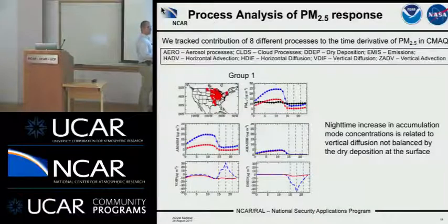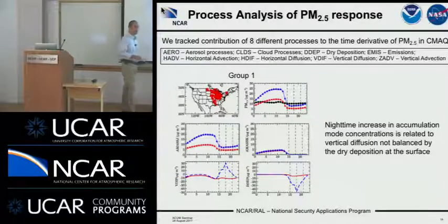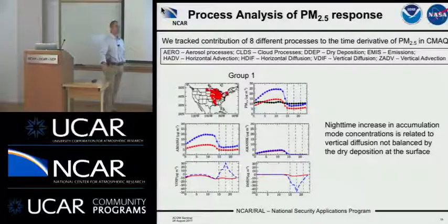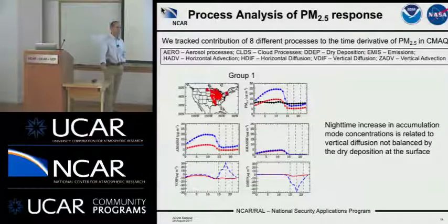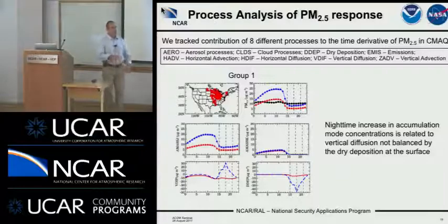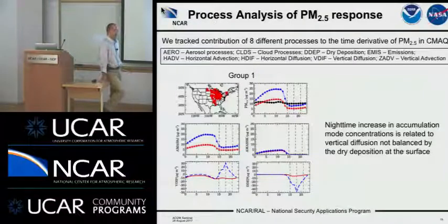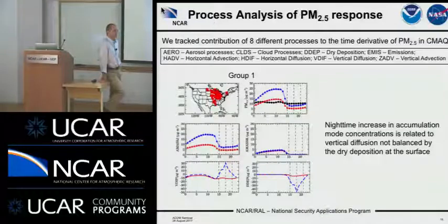Does it make sense that dry deposition is exactly zero? I understand if it's not very high, but it's exactly zero. In CMAQ version 5.1 they updated and restructured the dry deposition code, so I wouldn't be surprised if there is some bug somewhere. We can look at our 5.2 beta version. We're also asking whether we can do a simulation with WRF-Chem for the same case to see what kind of deposition values we get. But first we can look at other CMAQ runs and just check whether the dry deposition is really exactly zero, which doesn't really make sense.